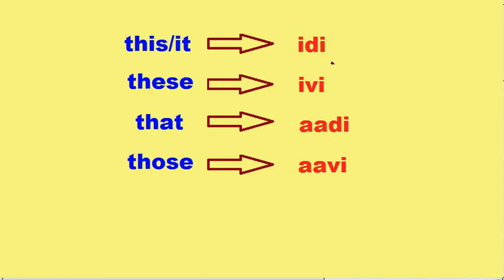'This' or 'it' is called Edie. 'This' is called Evie. 'That' is called Adi. 'Those' is called Avie.